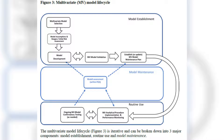Multivariate analytical procedures involve results derived from a multivariate calibration model using multiple input variables. This guideline focuses on models with latent variables related to directly measured variables. While similar principles apply to machine learning approaches like neural networks, specific methods vary and are not detailed here. Developing a robust multivariate procedure includes justified sample selection, range distribution, sample size, model variable selection, and data preprocessing.